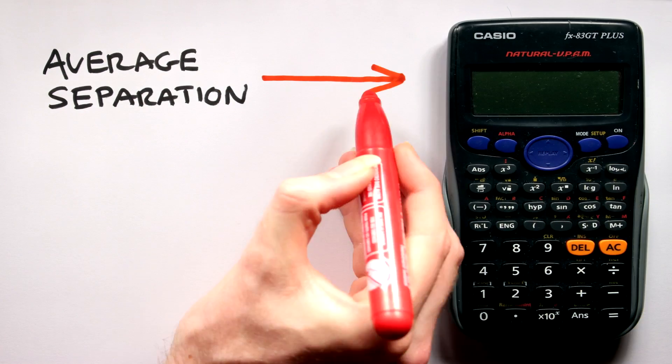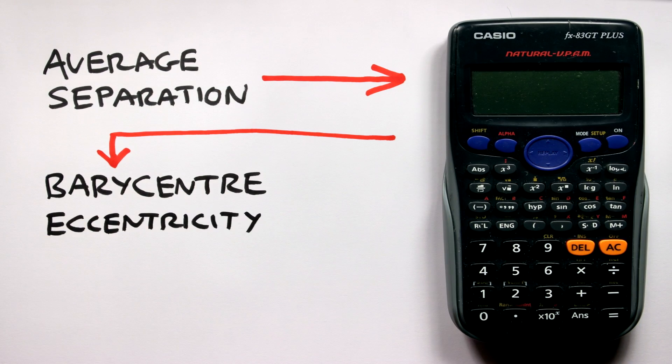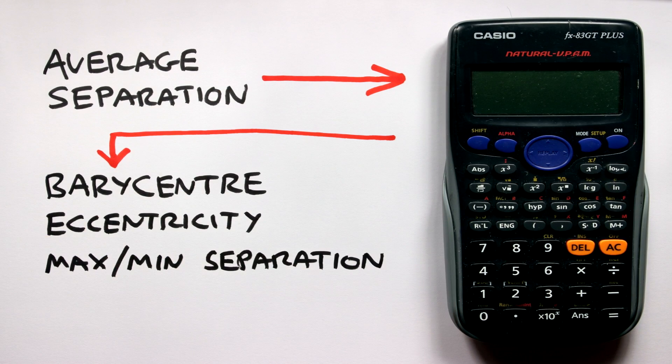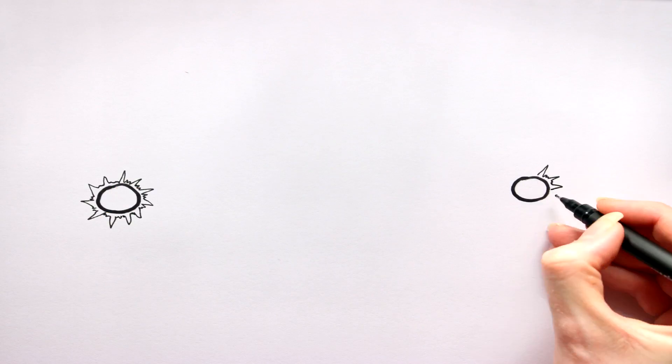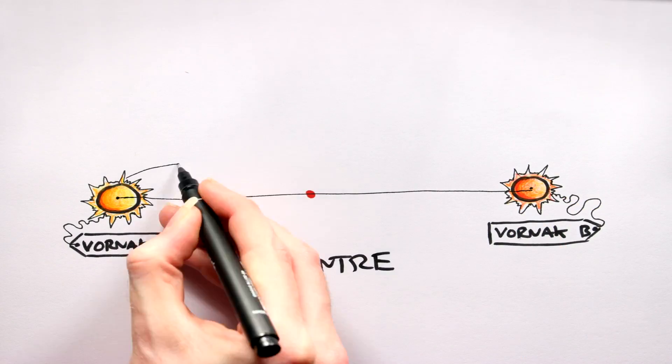Step 3: Deja Vu. Next up, use your average separation to calculate the barycenter, eccentricity, and overall maximum and minimum separation of the stars in your system. This is literally the same process as in the last video, so go mash that link up there for the formulas. So in my build the Vornak system ended up looking a little like this.